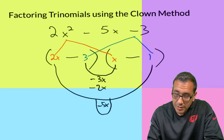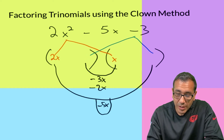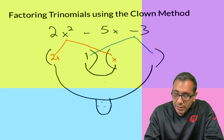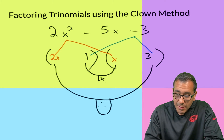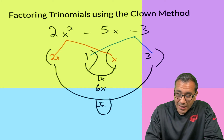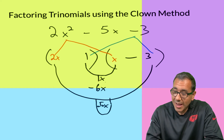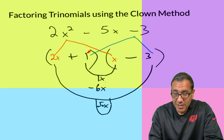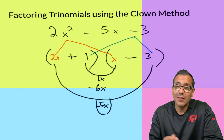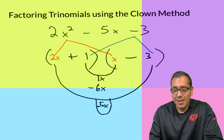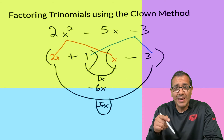Since that didn't work, I'll switch the 1 and the 3. Now with 1 here and 3 there: 1 times x gives 1x, and 2x times 3 gives 6x. For these to sum to negative 5x, the 6x must be negative, so the 3 is negative. That makes the 1 positive. Check: positive 1 times negative 3 gives negative 3 — that works! The more you practice these, the faster you'll get.